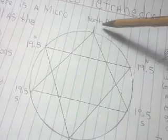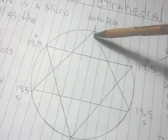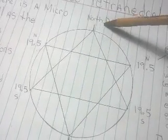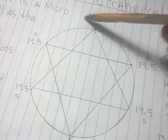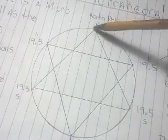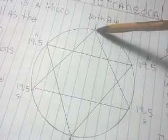You can't see that energy, but the geometry is telling you that it's there. What we have at 19.5 is exactly at 19.5 north and south latitude, we have an internal upwelling of energy.